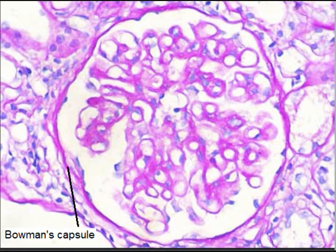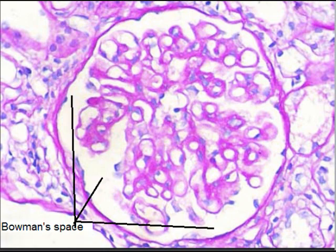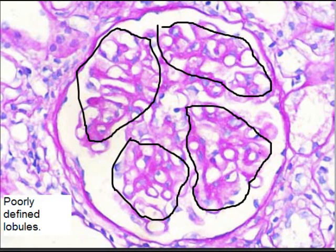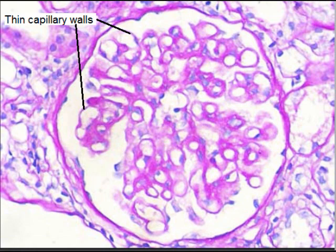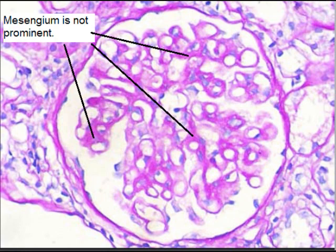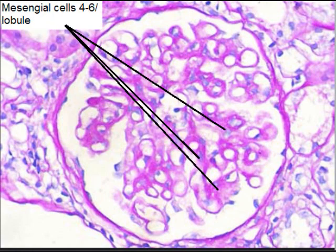There is Bowman capsule, and Bowman capsule has Bowman space, in which the ultrafiltrate is collected. Each glomerulus has poorly defined lobules — 5 to 6 lobules. There are thin capillary walls in a normal glomerulus, and the mesangium is not prominent.